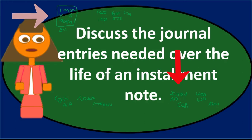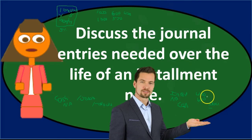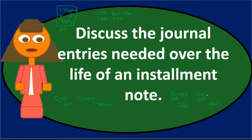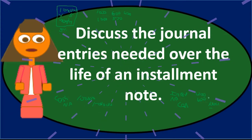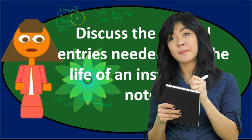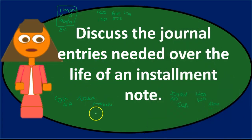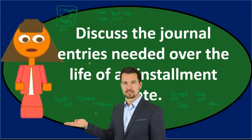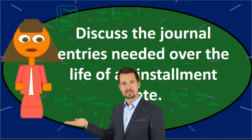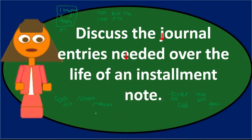This journal entry is repeated — in this example, monthly for five years. The cash amount stays the same, but the amount allocated to interest decreases and the amount allocated to principal increases with each payment. Once we reach the last payment after five years, the note payable balance on the books should be zero, and the note is completely paid off.